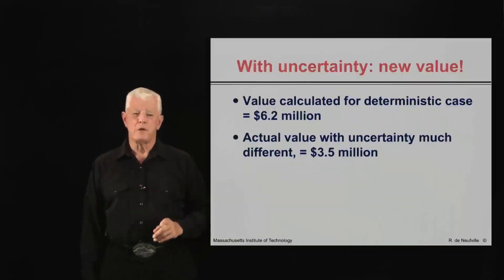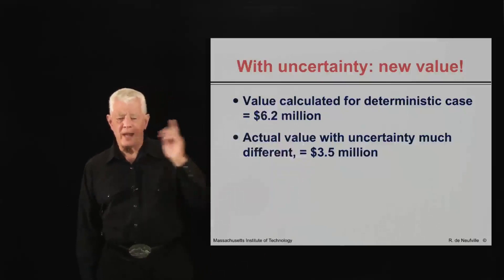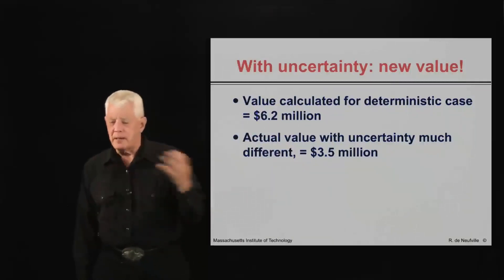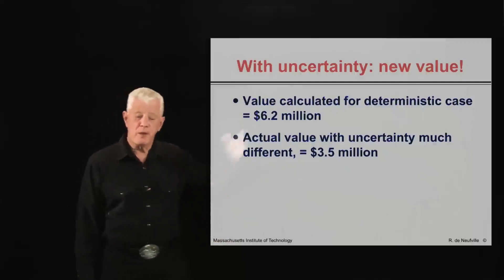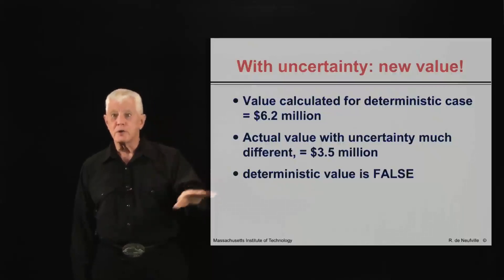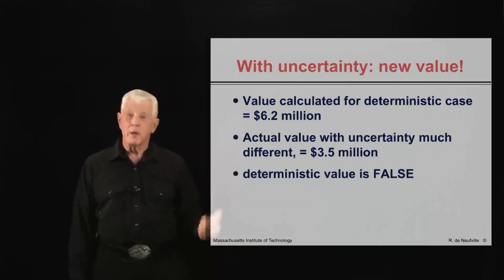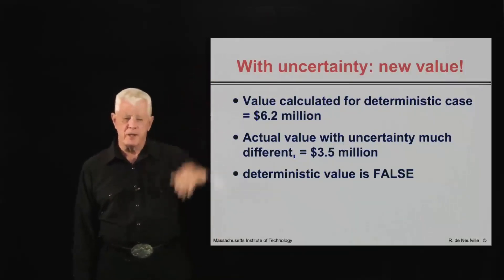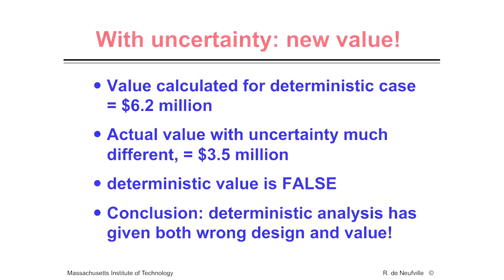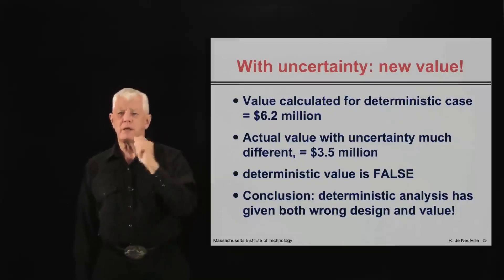So the basic result is: the value calculated for the deterministic case was $6.2 million. The actual value with the uncertainty as we've modeled it was about $3.5 million — a significant difference. The deterministic value is false because the world is not deterministic; the world is full of variability. And in this case it's lower because of the capacity constraint on upside gains. The deterministic analysis is wrong on two counts: the value of the system as calculated is wrong, and the optimal design is not the same as before. So wrong twice. We've got to do better than that.